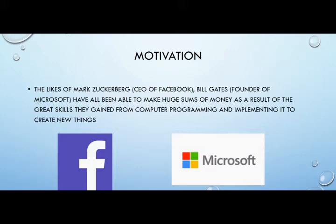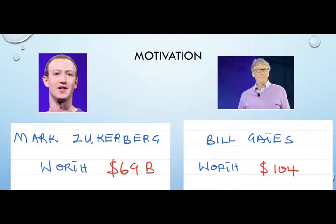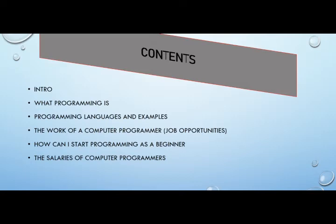They learned how to program and from programming they've made huge sums of money. Today, Mark Zuckerberg, the founder of Facebook, is worth about 69 billion dollars and is the fifth richest person on earth. Bill Gates is worth 104 billion dollars and is the second richest person on earth, and Jeff Bezos is currently the most richest person on earth. This is just a little motivation — you might not make money like them, but at least you can make money.